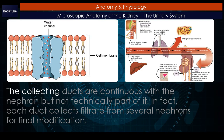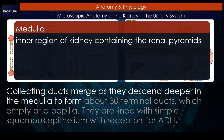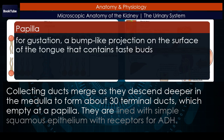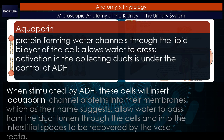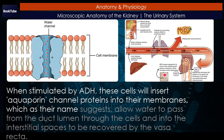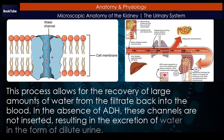Collecting ducts. The collecting ducts are continuous with the nephron but not technically part of it. Each duct collects filtrate from several nephrons for final modification. Collecting ducts merge as they descend deeper in the medulla to form about 30 terminal ducts, which empty at a papilla. They are lined with simple squamous epithelium with receptors for ADH. When stimulated by ADH, these cells will insert aquaporin channel proteins into their membranes, which allow water to pass from the duct lumen through the cells and into the interstitial spaces to be recovered by the vasa recta. This process allows for the recovery of large amounts of water from the filtrate back into the blood. In the absence of ADH, these channels are not inserted, resulting in the excretion of water in the form of dilute urine.